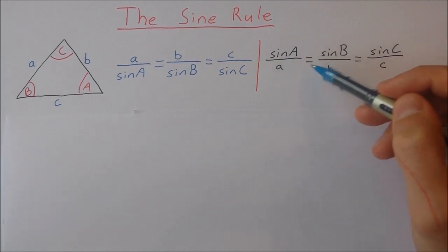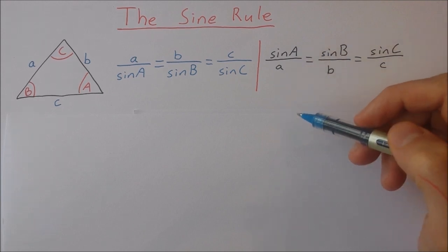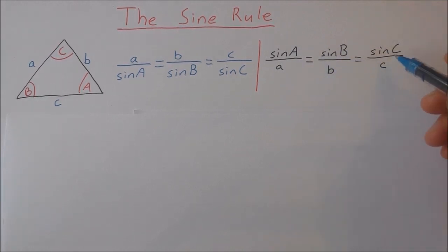And you can also invert each of these fractions as well to put the sine of A over the side a, the sine of B over the length of the side b, and the sine of C over the length of the side c.